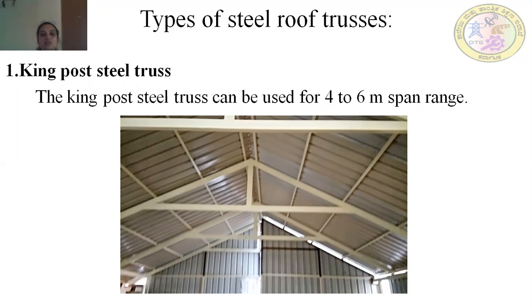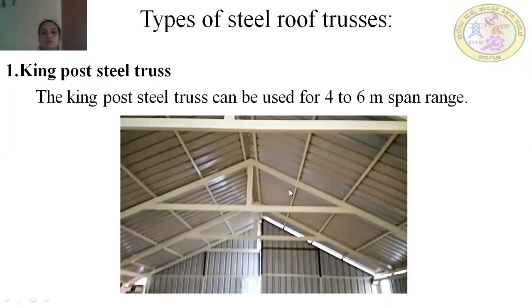The first type is the king post steel truss. King post steel trusses can be used for a four to six meter span range. The truss consists of two inclined rafter members, one horizontal tie beam, and a vertical king post member at the head.